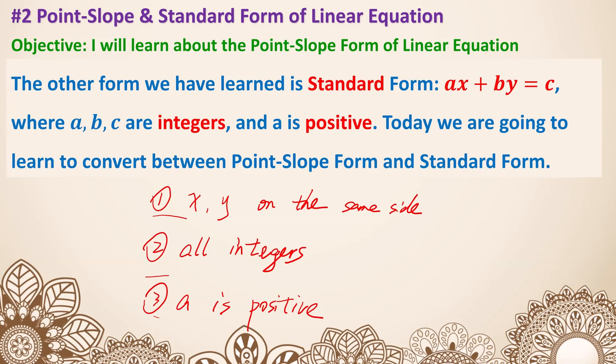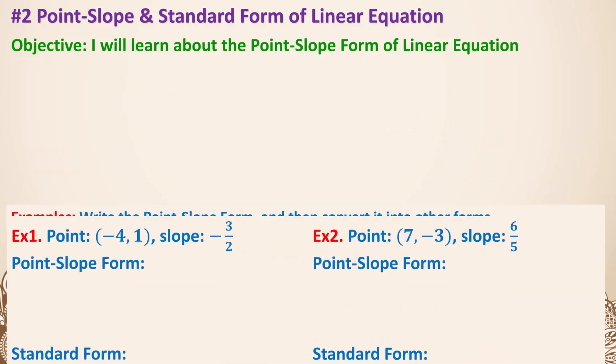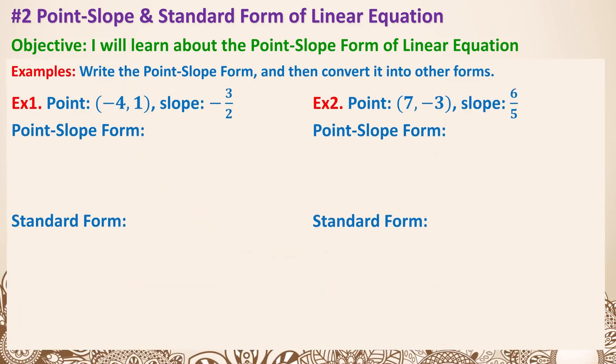Today we are going to learn to convert between point-slope form and standard form, also involving slope-intercept form. Let's have a look at examples one and two. You are given a point and a slope. As a reminder, point-slope form is y minus y1 equals m times (x minus x1).